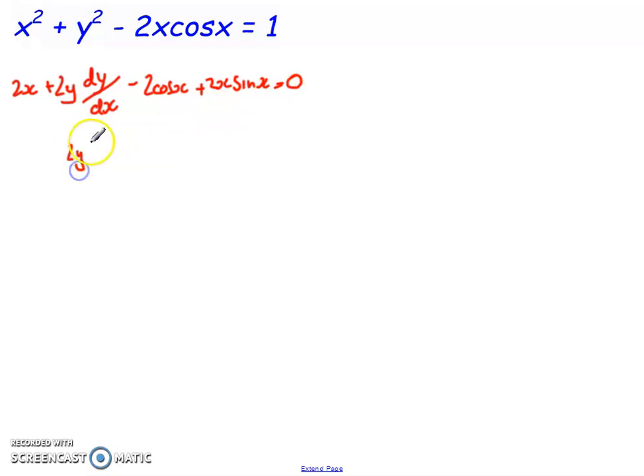So I'm going to end up with 2y times dy/dx here equals, but what I'm going to do is as I move everything across, I'm actually going to take out 2 as a common factor as well. So I'll end up with 2(cos x - x sin x - x) on the right-hand side. And if I then divide through by the 2y, I get dy/dx equals that there, so the cos x - x sin x - x all over y, because I've just cancelled out the 2 here as the common factor and the 2 there.